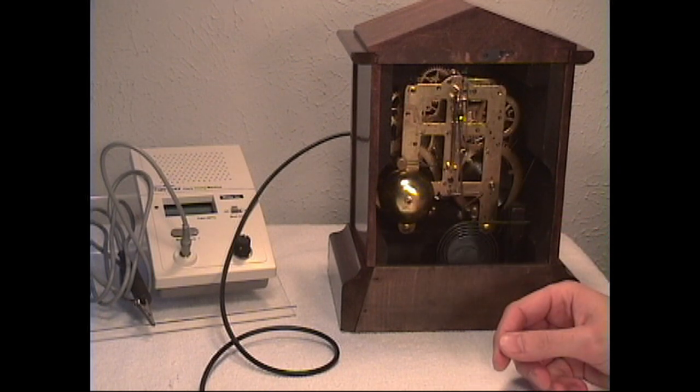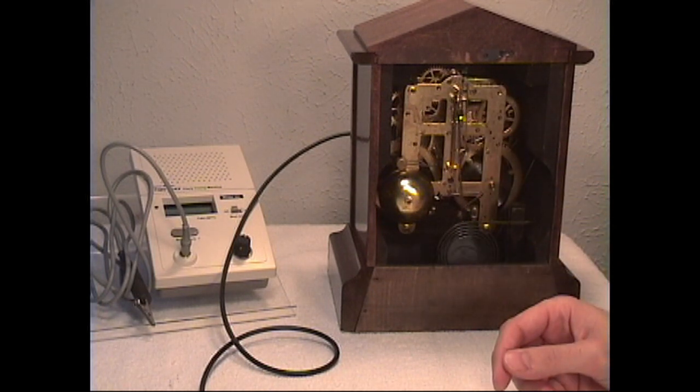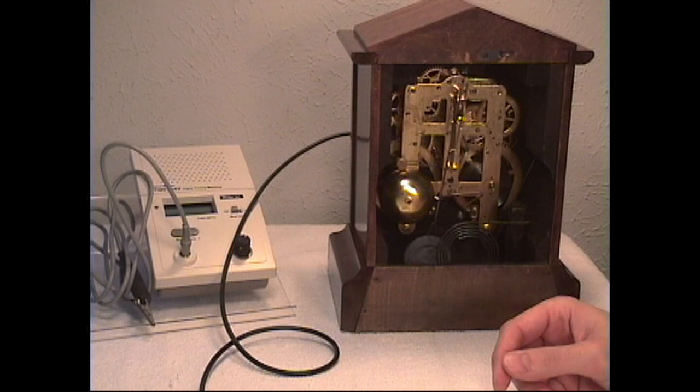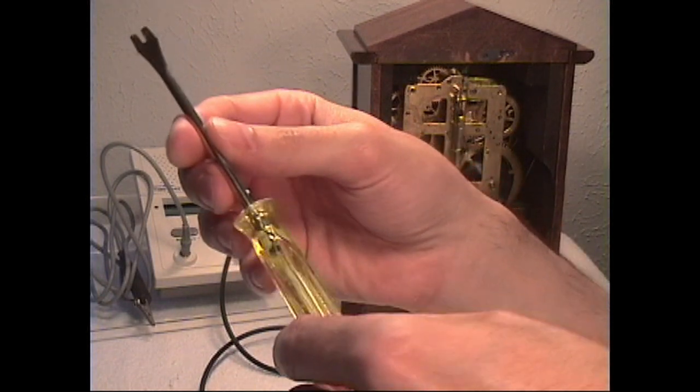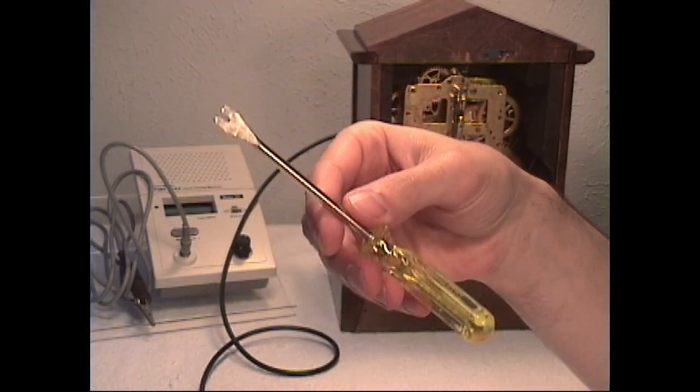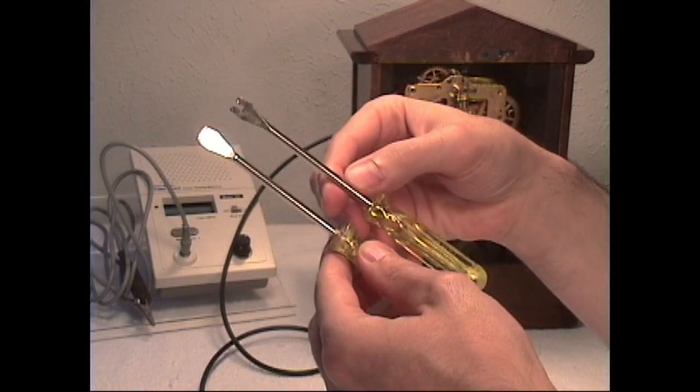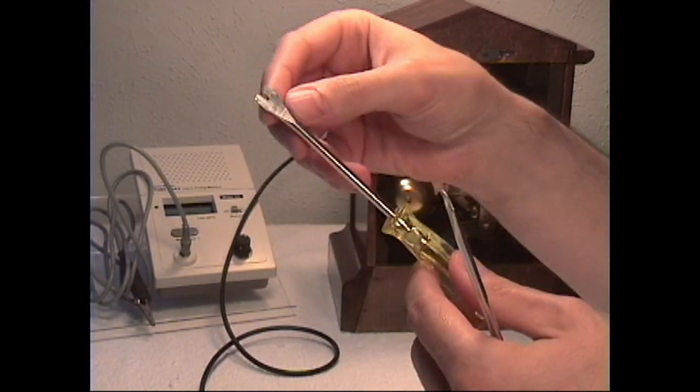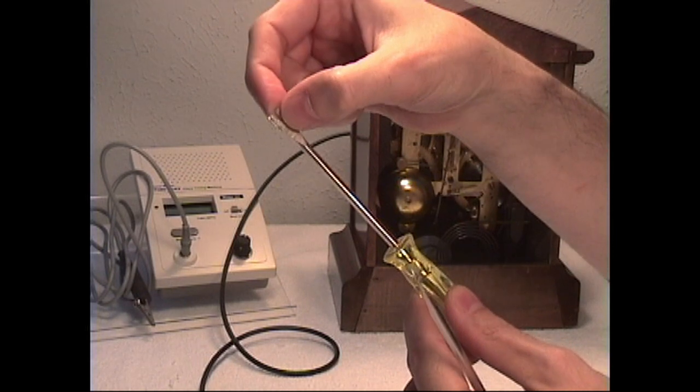Now there's a couple ways we can bend that crutch and you can use a homemade tool that looks like this. This is a screwdriver and this is what it looked like before and all I did was cut out this center section here.